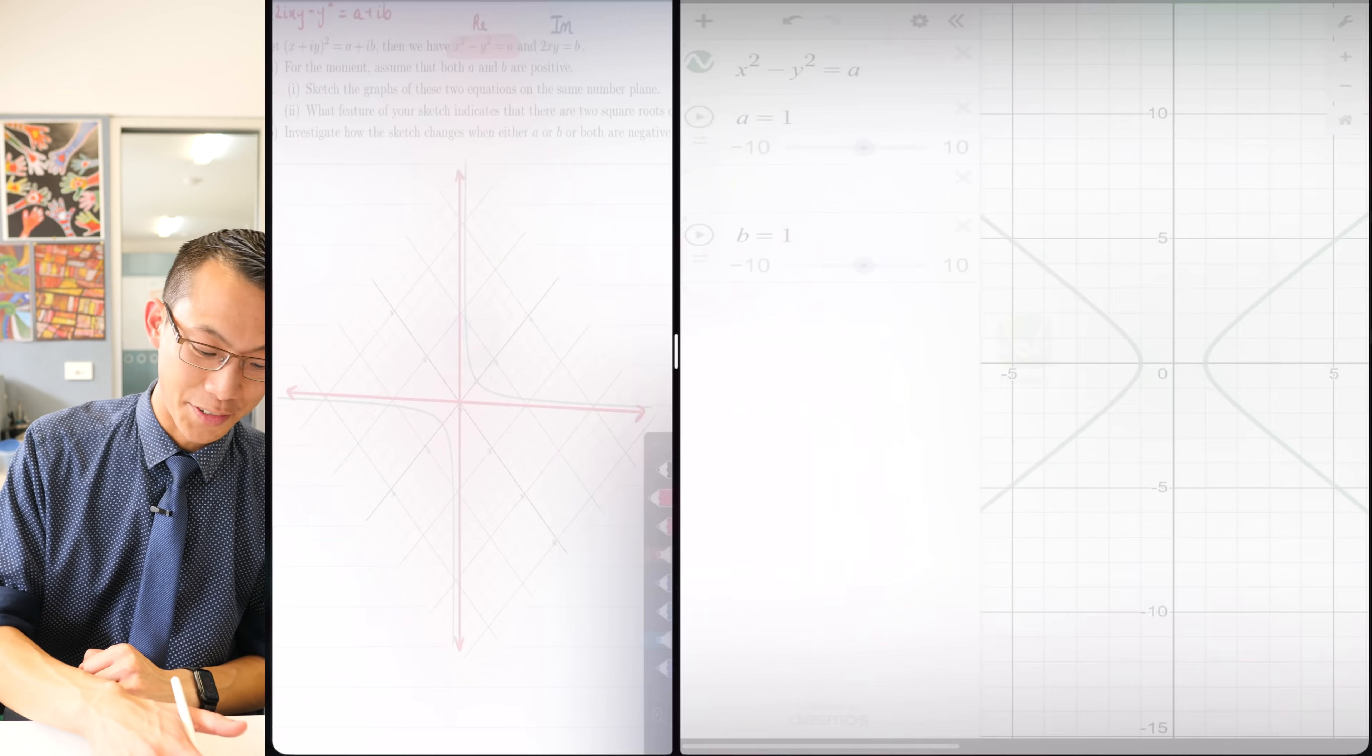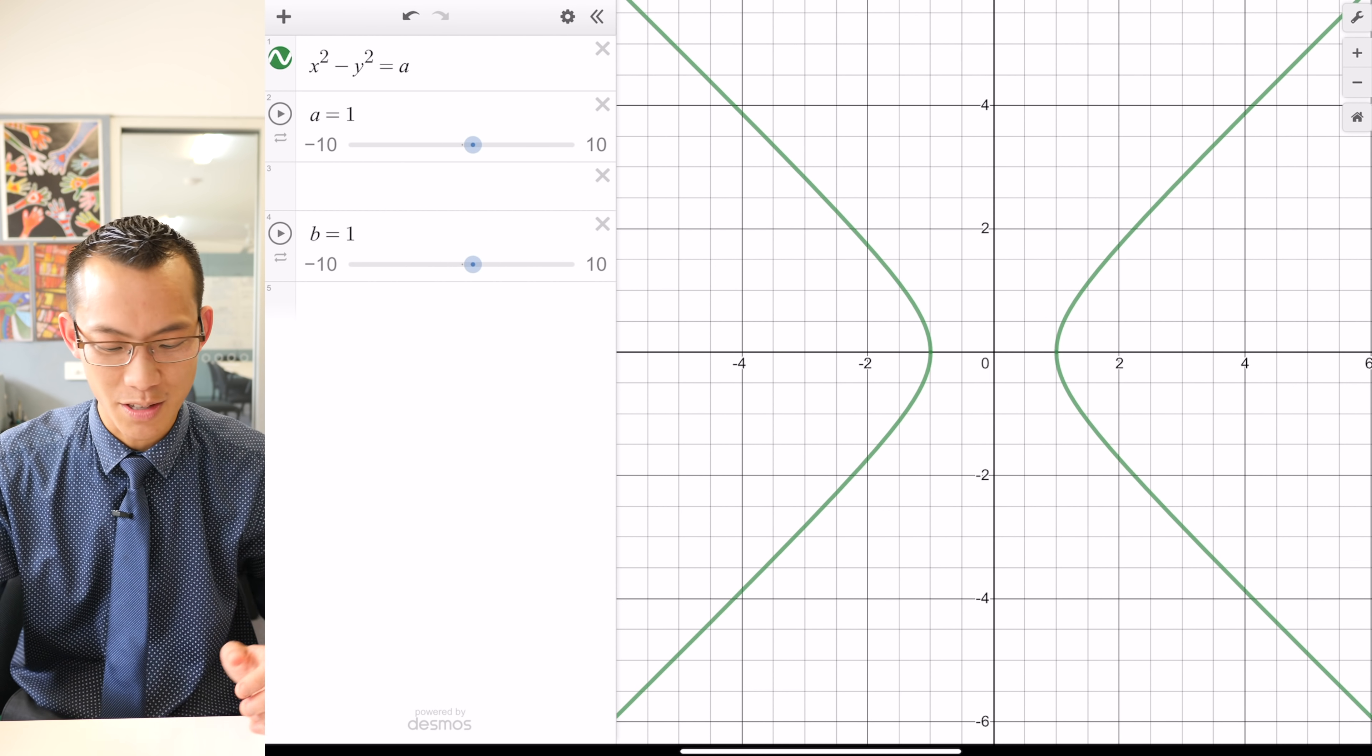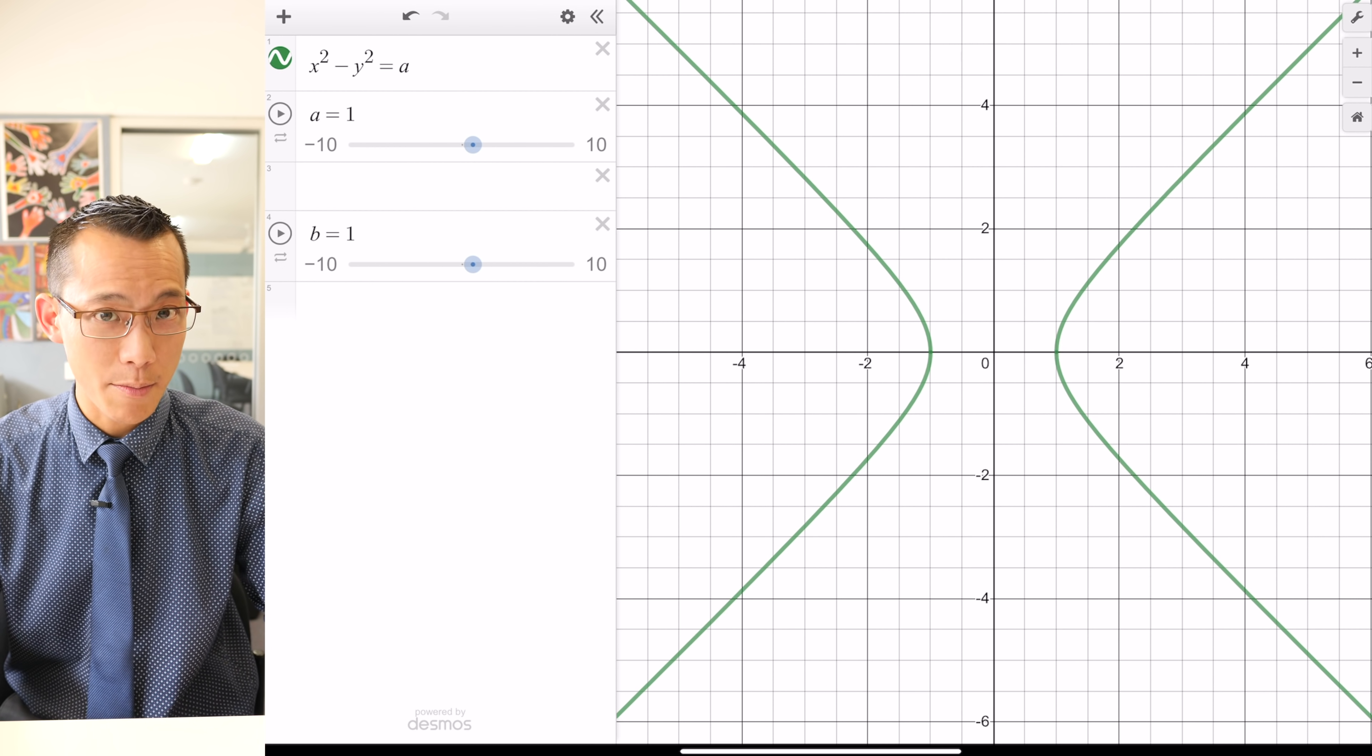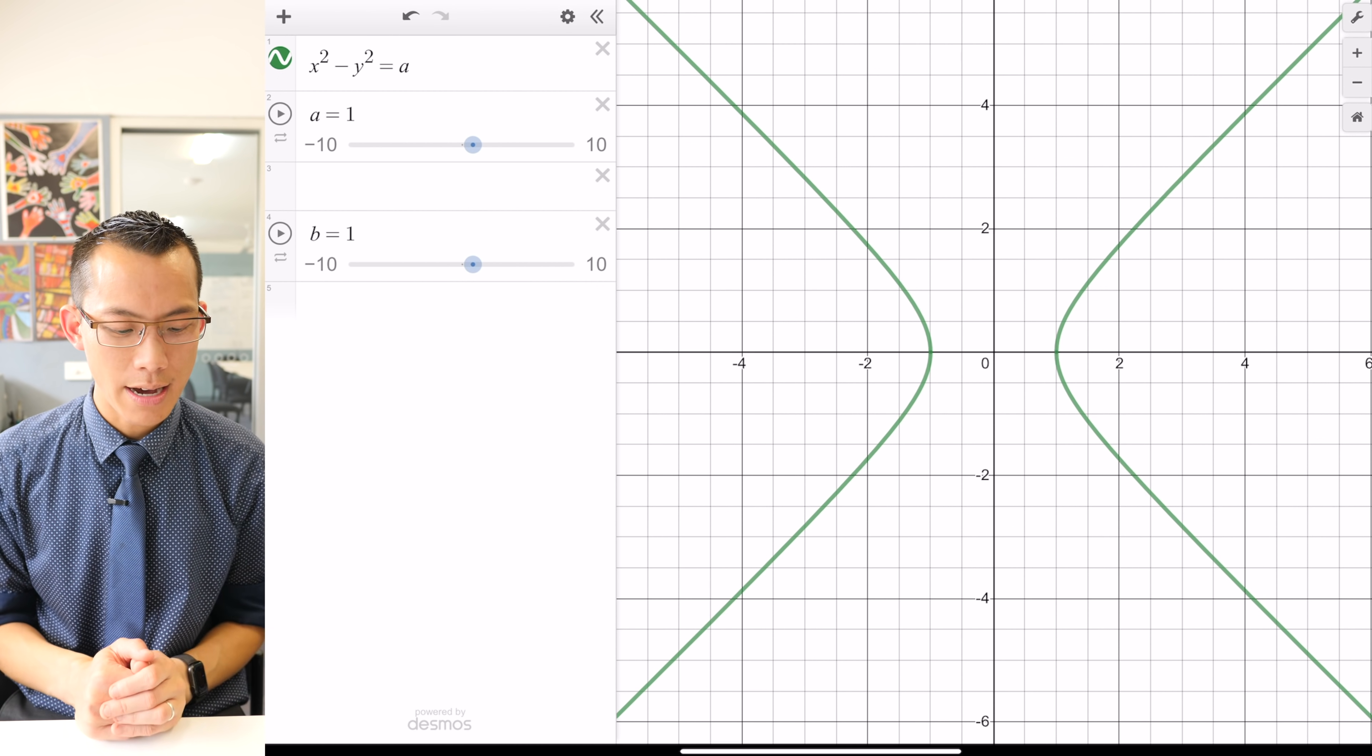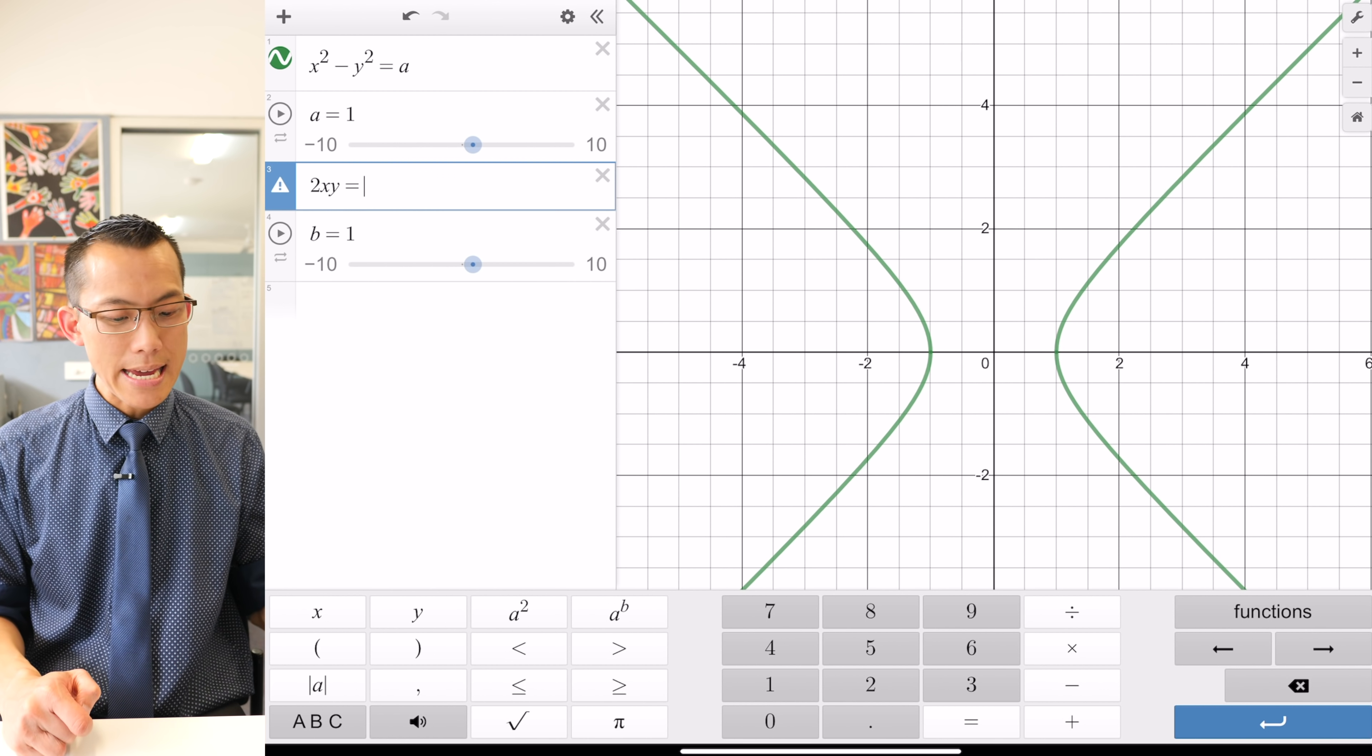It used to be dealt with in the old course, so you can have a look—I've got videos on this if you're curious. Now what they then say is to investigate what happens when you plot this on the same graph as the other equation that we got simultaneously. x squared minus y squared equals a, that's what happens when you compare the real components on the left and right-hand side. The other equation was 2xy is equal to b.